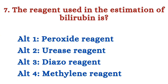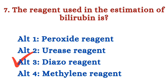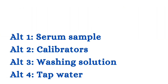Question number 7: The reagent used in the estimation of bilirubin is — Option 1: Peroxide reagent. Option 2: Urease reagent. Option 3: Diazo reagent. Option 4: Methylene blue reagent. The right answer is Option 3 — diazo reagent. Diazo reagent is used in the Malloy and Evelyn method for bilirubin estimation.